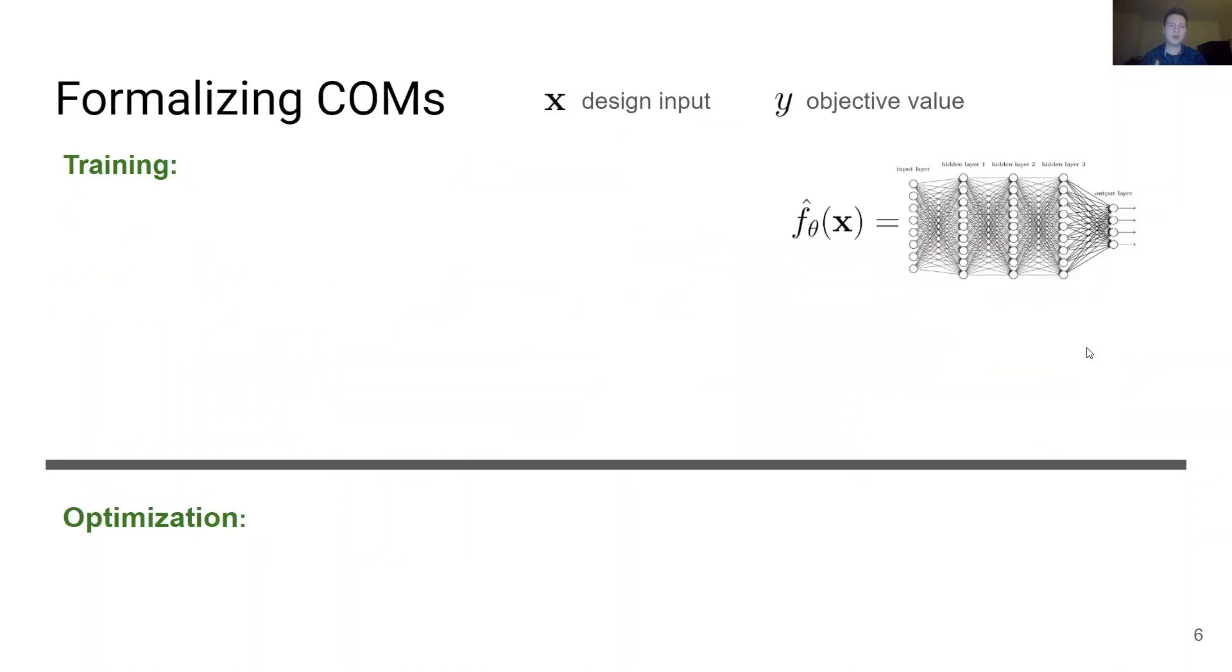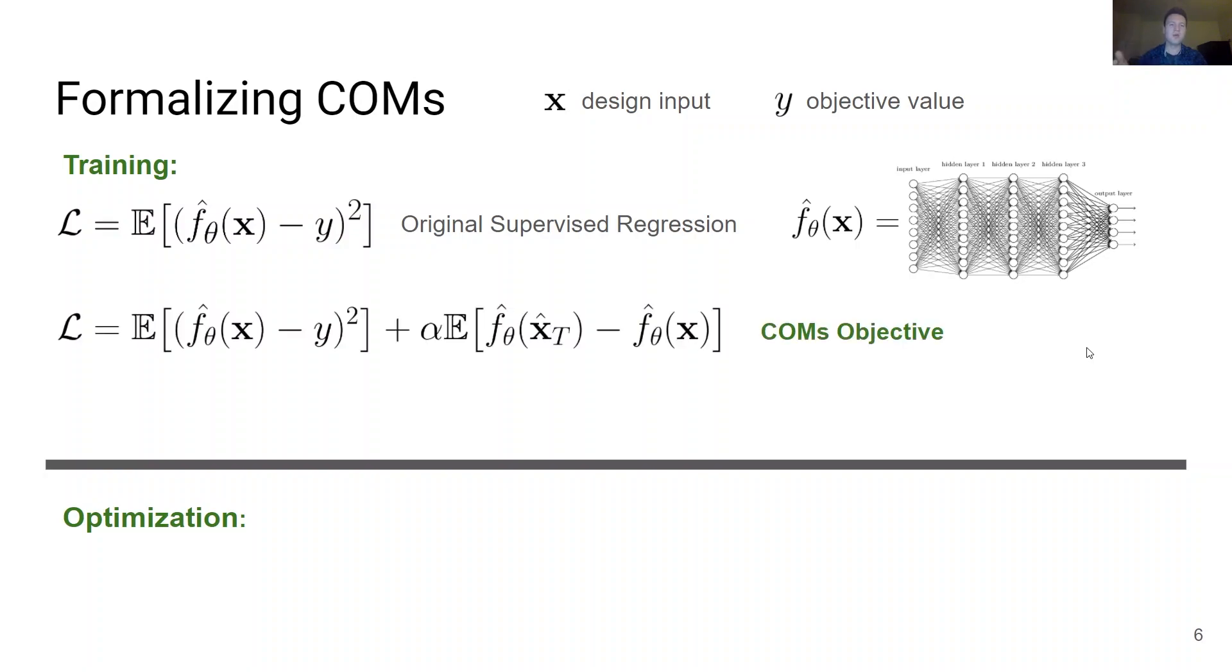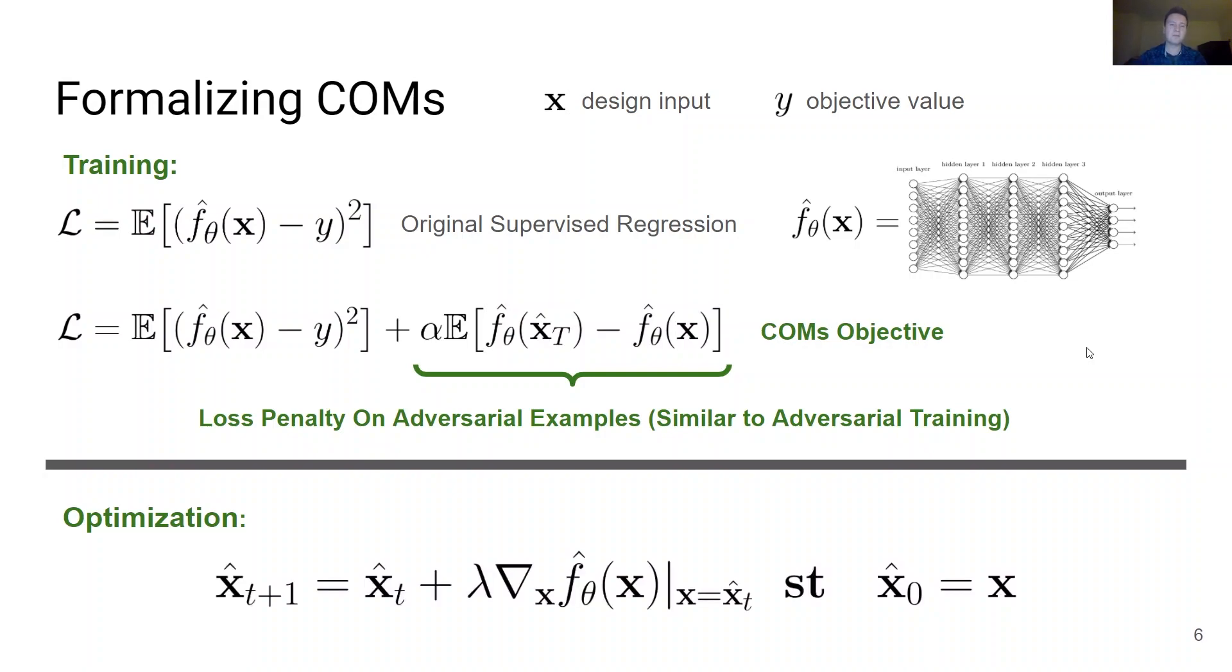Formally, while a traditional predictive model is trained using supervised regression, COMs are trained using an augmented regression objective where a penalty term is added weighted by a coefficient alpha that controls how much the model underestimates the objective. This term penalizes adversarial solutions to the optimization problem found by starting from a design X from the dataset and performing k steps of gradient descent to maximize the predictions of the model.